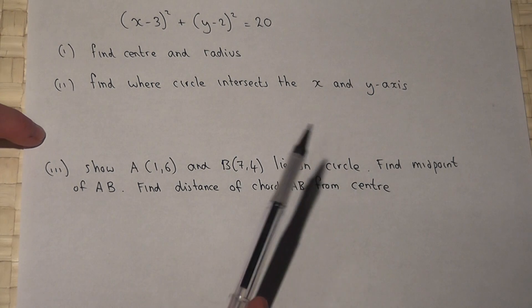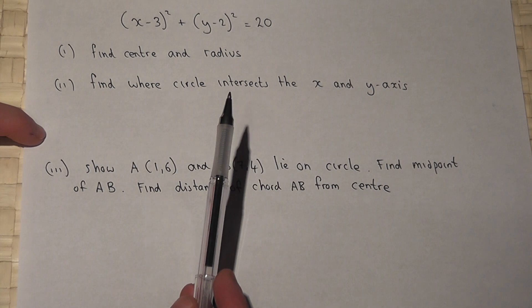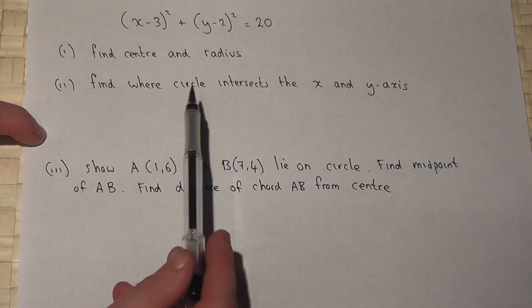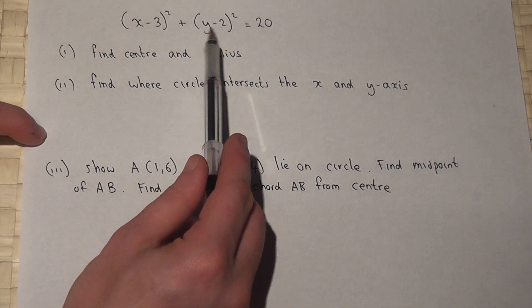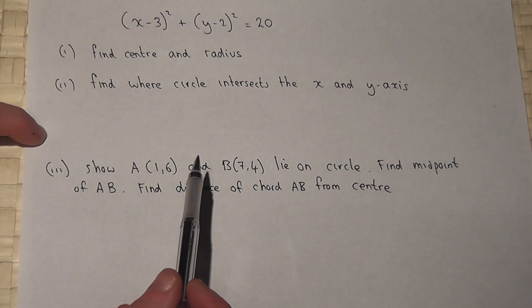This question deals with a circle given by the equation (x-3)² + (y-2)² = 20.